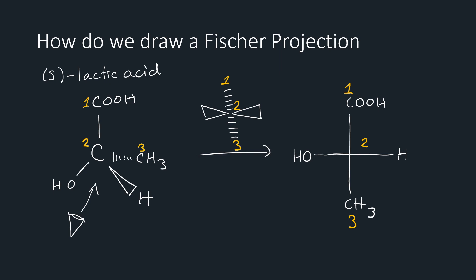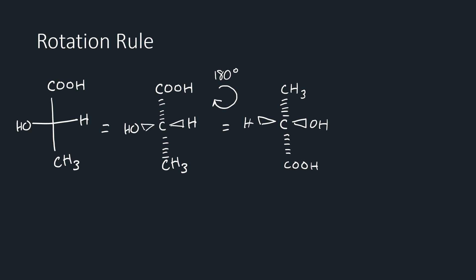So you might be wondering if we always need to keep our carbon 1 on top of the projection. Well, we have a rule for this. This rule allows us to rotate our Fischer projection and end up with the same molecule. We'll take our S-lactic acid projection from earlier, and we'll convert it back to the dashed wedge symbols. As we know, these are the same molecules. Notice how our wedges are horizontal and dashes are vertical. Now we'll apply a 180 degree turn to our projection, which will end up something like this. Looking closely, this is the same molecule. Our wedges are still horizontal, and our dashes are still vertical. Thus, when we convert this dashed wedge model back into a Fischer projection, we end up with the exact same molecule.